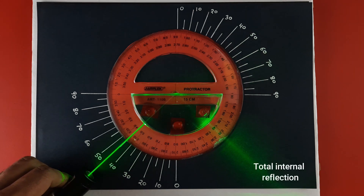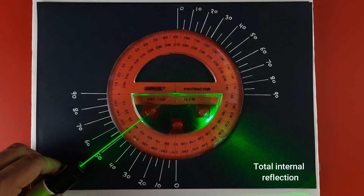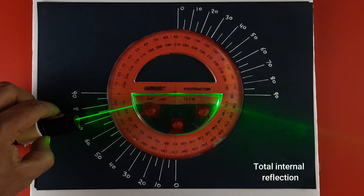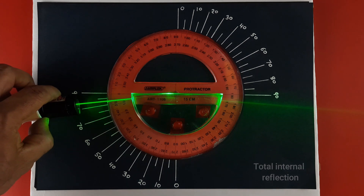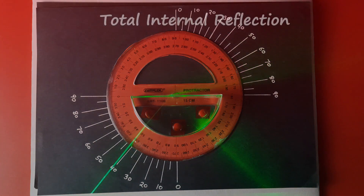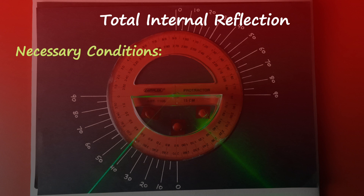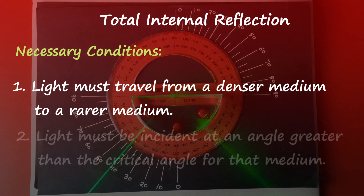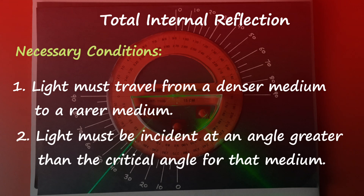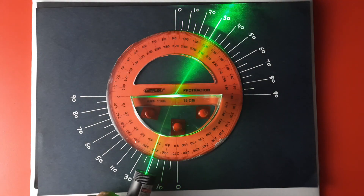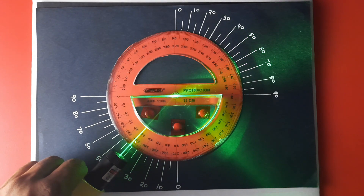If the angle of incidence is increased beyond the critical angle, then internal reflection will take place. This phenomenon, as we discussed in activity one, is known as total internal reflection. The necessary conditions for total internal reflection are: 1. Light must travel from a denser medium to a rarer medium. 2. Light must be incident at an angle greater than the critical angle for that medium. Watch the video again and observe carefully what happens when the angle of incidence is close to 40–42 degrees.